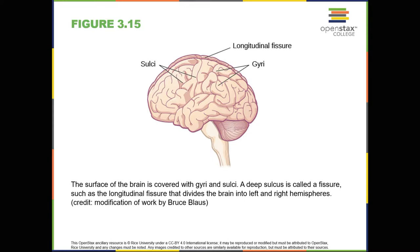The surface of the brain, known as the cerebral cortex, is very uneven, characterized by a distinctive pattern of folds or bumps, known as gyri (singular gyrus), and grooves, known as sulci (singular sulcus), which are shown in figure 3.15. These gyri and sulci form important landmarks that allow us to separate the brain into functional centers.